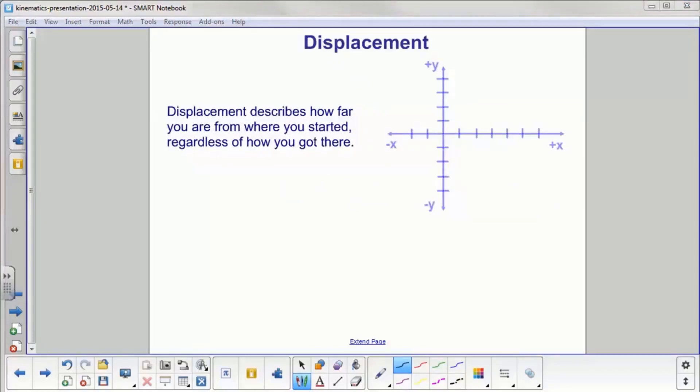Displacement describes how far you are from where you started, regardless of how you got there. We don't care. You could have gone right and then left. You could have gone left and then right. It doesn't matter. We just want to know how far you are from your starting point when you're finished with your movement.